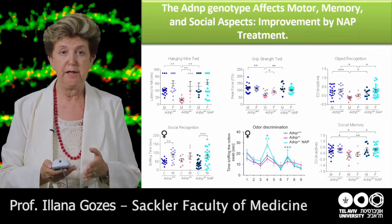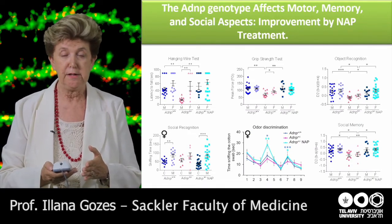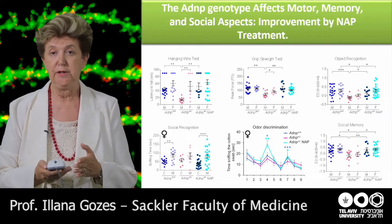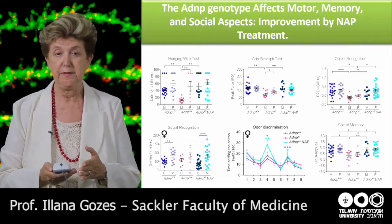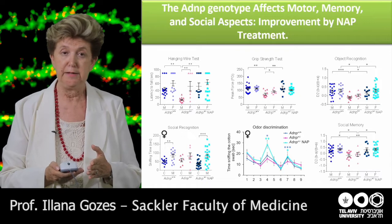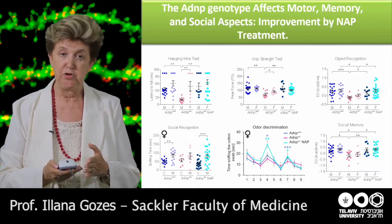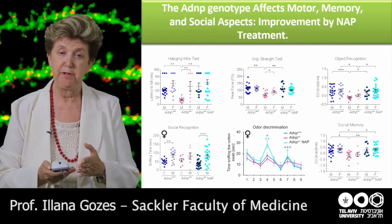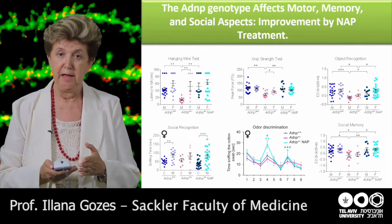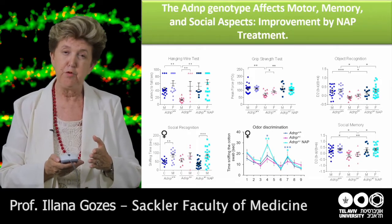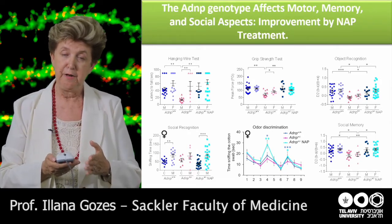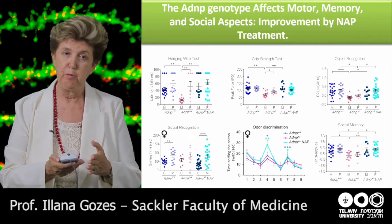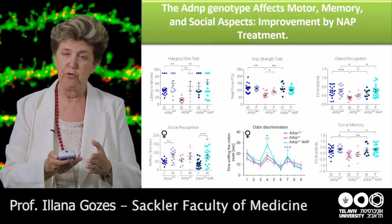We then looked at motor activities, including the hanging wire test and the grip strength test. Again, the haploinsufficient males were slower and had less strength, and when we treated with NAPVSIPQ, we corrected it. Recall that in the motor cortex the effect was more severe in the males, and this translates into a more severe effect on motor function.